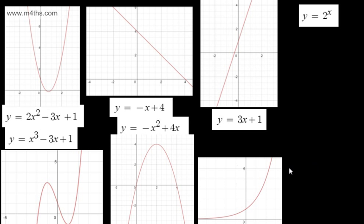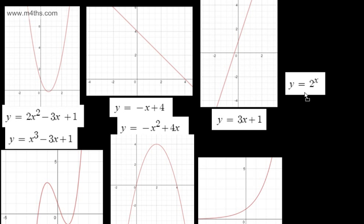This one here is an exponential graph and all we're left with is 2 to the x. So we can simply say now that 2 to the x is the graph just here. So we've taken six equations and matched them to each of their graphs.